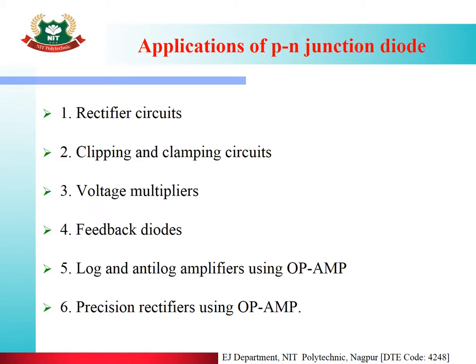The applications of PN Junction Diode include: rectifier circuits, clipping and clamping circuits, voltage multipliers, feedback diodes, log and anti-log amplifiers using op-amp, and precision rectifiers using op-amp. These are all the applications of the PN Junction Diode.